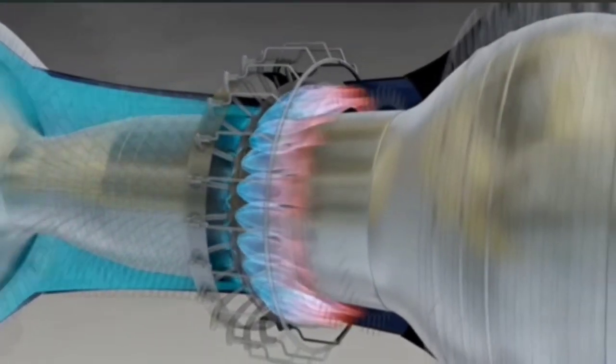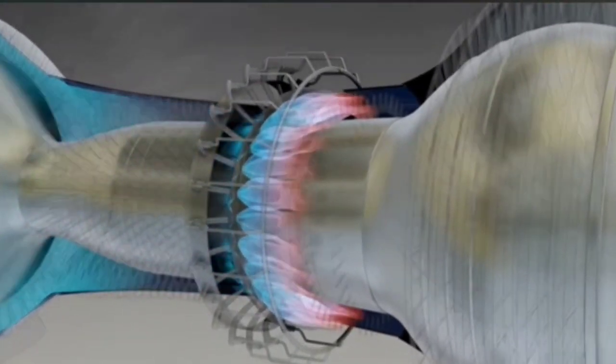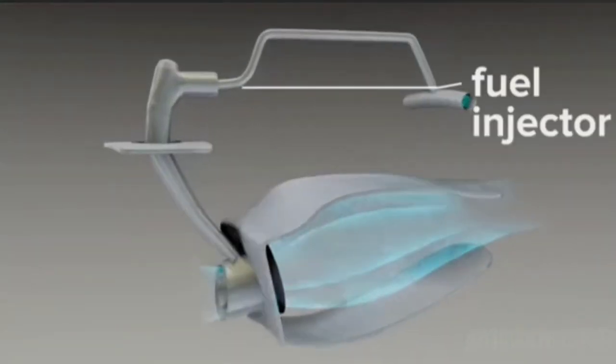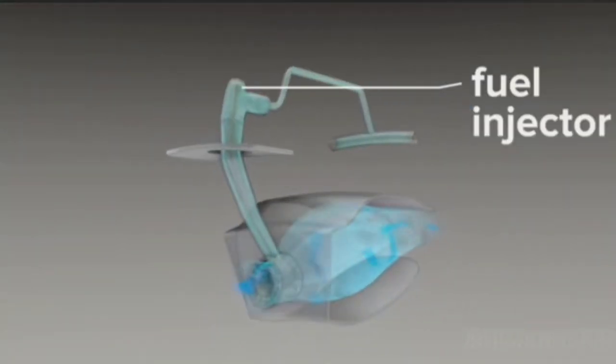Compressed air enters the inlet nozzles. Each nozzle is coupled with a fuel injector and is designed to swirl the incoming fuel and air for an even mix.